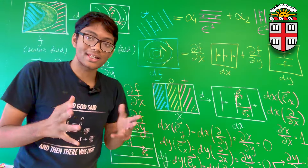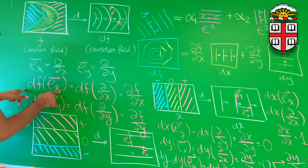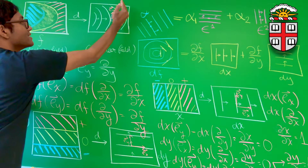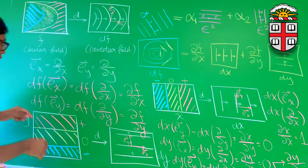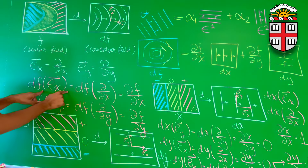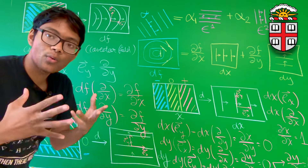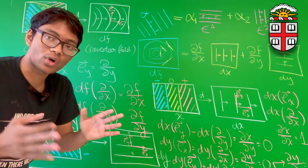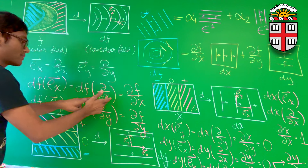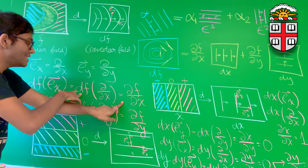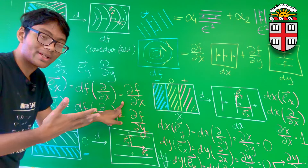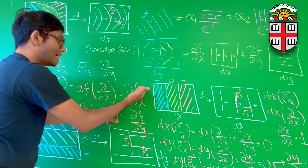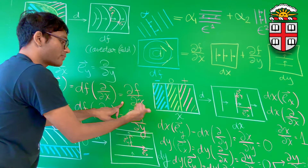Here's where the key idea comes in. What is the number of contour lines that e_x crosses? In other words, what is our co-vector field df applied to e_x? That's going to help us answer how many contour lines e_x crosses. Since e_x is ∂/∂x, df applied to our basis vector is simply the partial derivative ∂f/∂x.